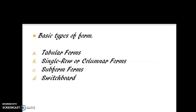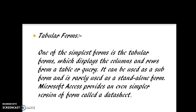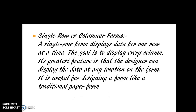The basic types of forms are: tabular form, single row or column form, subform, and switchboard form. A tabular form is one of the simplest forms — it displays the columns and rows from a table or query. It can be used as a subform and is rarely used as a standalone form. Microsoft Access provides an even simpler version called a data sheet. A single row form displays data for one row at a time, with the goal of displaying every column, and the designer can display the data at any location on the form. It is useful for designing a form like a traditional paper form.